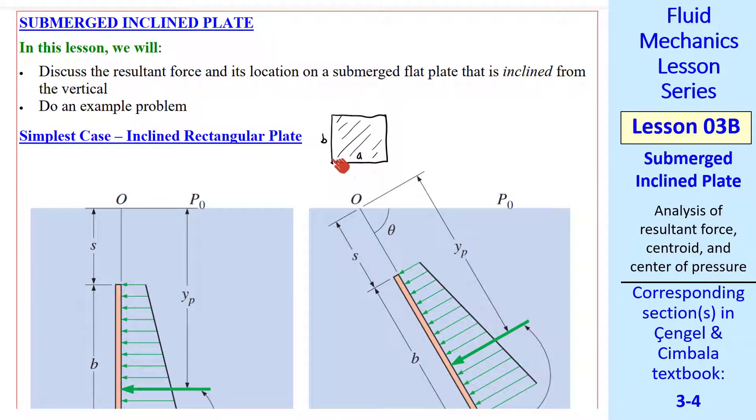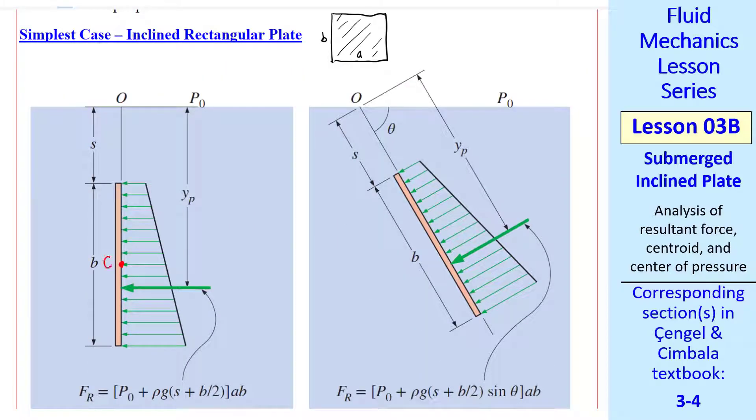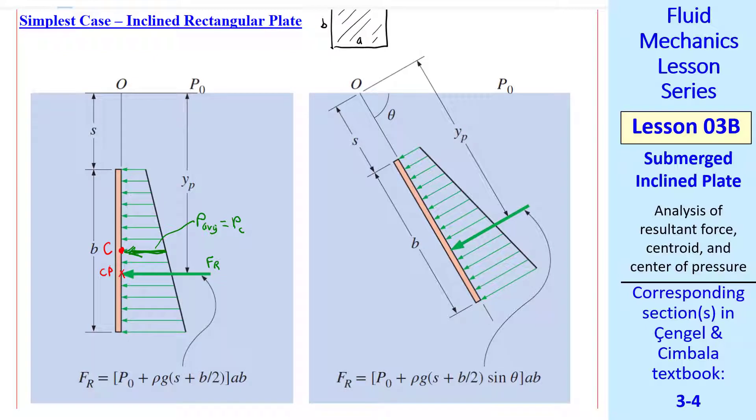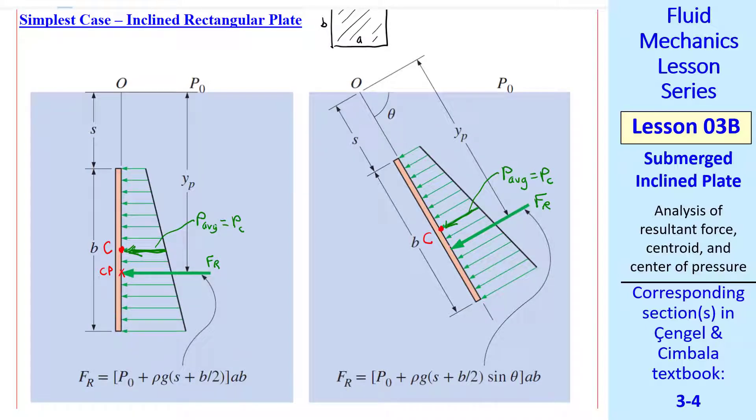In a previous lesson, we discussed a vertical plate of dimensions AB. We defined the centroid where the average pressure acts, P average equals PC, the pressure at the centroid. But the resultant force acts a little below that at the center of pressure. We do the same thing for the inclined plate. Our centroid is there, P average is PC as before, and the resultant force acts at the center of pressure.